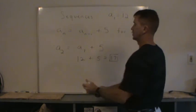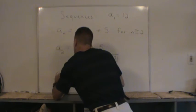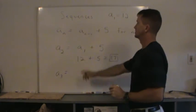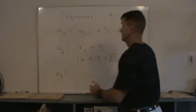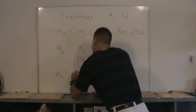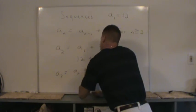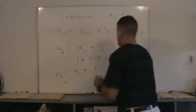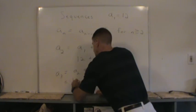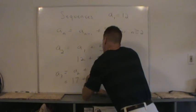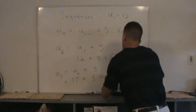Okay, we'll get one more term. Let's get the third term. a_3 equals the previous term, a_2 plus 5. a_3 equals 17 plus 5, which is 22.